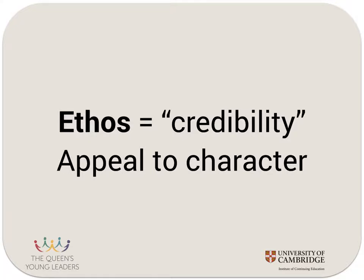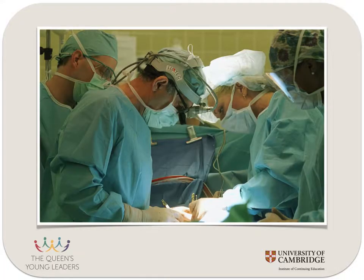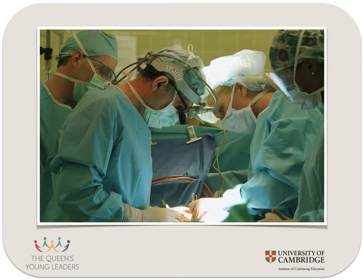Ethos means credibility — this is the appeal to character, and it's where we get the English word 'ethical.' If the person talking to us clearly knows what they're talking about, they have credibility and we're more likely to be swayed by them. Credibility can come from different areas: you can be an expert because you've studied something for a long time, or because you've lived it. A surgeon might be an expert in what makes the heart work, but only someone who's had a heart attack can tell you what it feels like. Both have credibility, but of very different types.